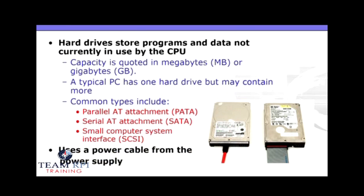And your hard drive — just like RAM, it stores programs and data from your PC; however, it's the data not currently in use by the CPU. We'll talk about hard drives in more detail later, but for now understand the different types include PATA, or parallel AT attachments; SATA, serial AT attachments; or SCSI, small computer system interfaces.